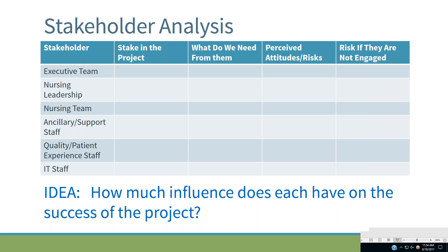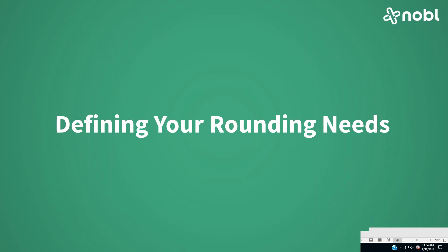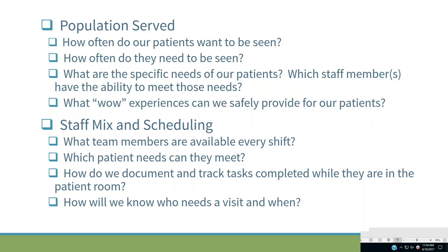We're about halfway through. Let's start now on how you begin to define what you need. What meets a little community hospital isn't necessarily the same as what meets the needs of a large academic teaching hospital. Let's look first at what population do you serve? You're going to have different rounding needs for ICU, mental health and behavioral health, rehab, and ambulatory settings. Just because a patient isn't in a bed doesn't mean they wouldn't benefit from some sort of round — it might not be hourly.